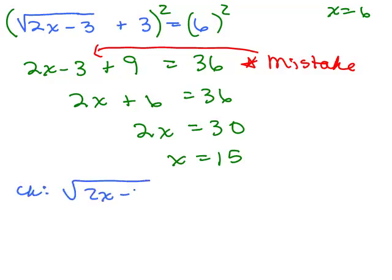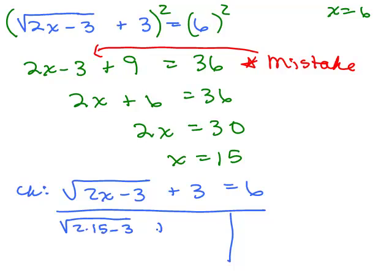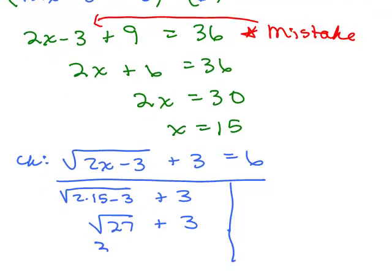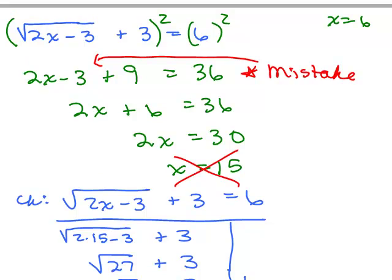If you check x equals 15 in the original problem, you get: 2 times 15 minus 3 under the radical, which is square root of 27, plus 3. The square root of 27 simplifies to 3 square roots of 3, because 27 equals 9 times 3. But 3 square roots of 3 plus 3 are unlike terms and will never equal 6. This does not check, confirming it's the incorrect answer. To get the correct answer, you must isolate the square root first.